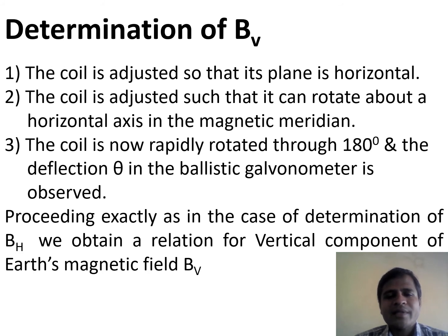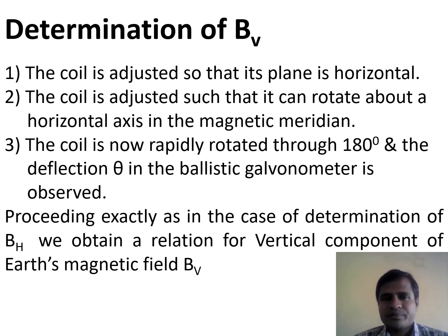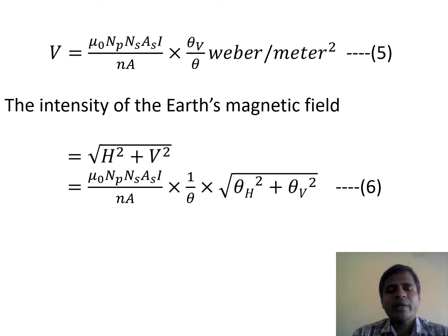Proceeding exactly as in the case of determination of BH, we obtain a relation for the vertical component of Earth's magnetic field BV. The expression for BV equals mu-naught times NP times NS times AS times I upon (N times A) times (theta V upon theta) Weber per meter square. Let this equation be equation 5.